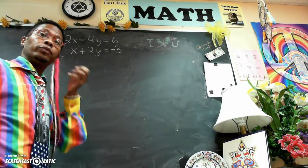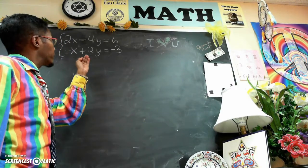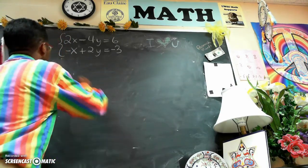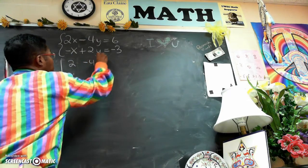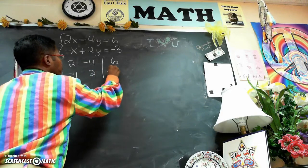To start this, first we make an augmented matrix of the system, or an initial matrix, as follows: 2, negative 4, 6, negative 1, 2, negative 3.